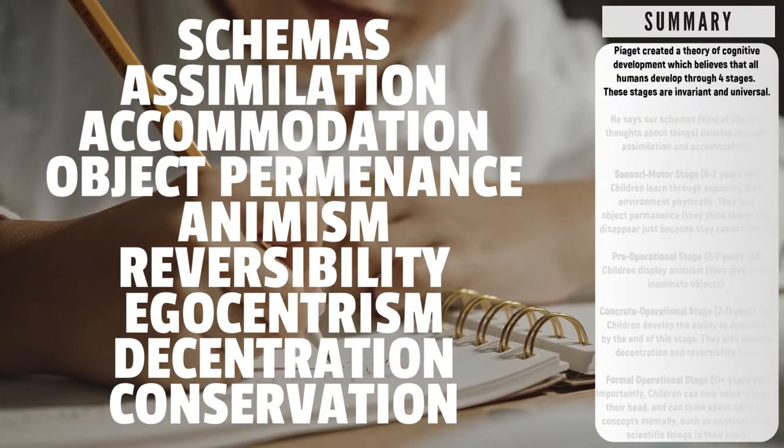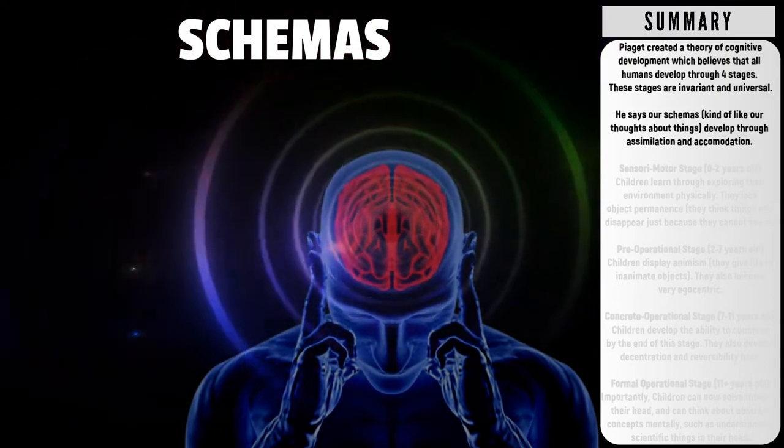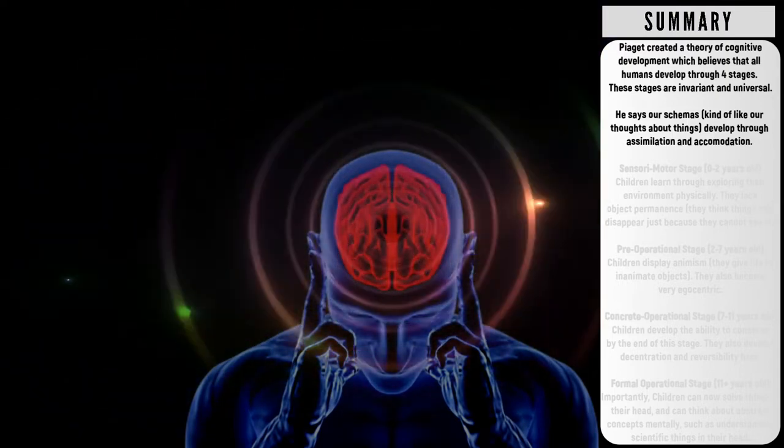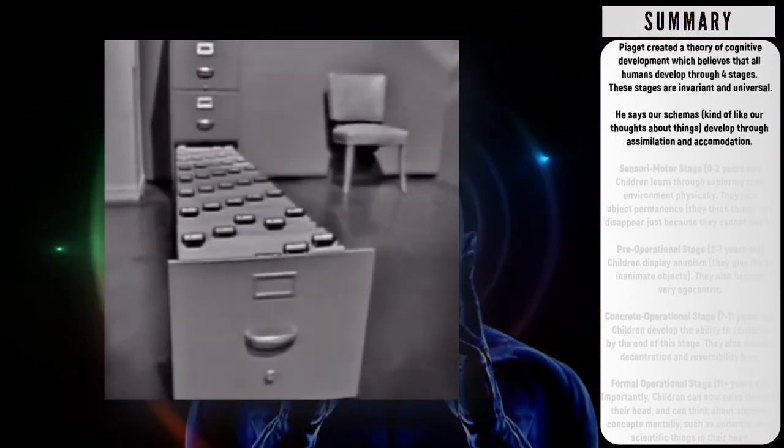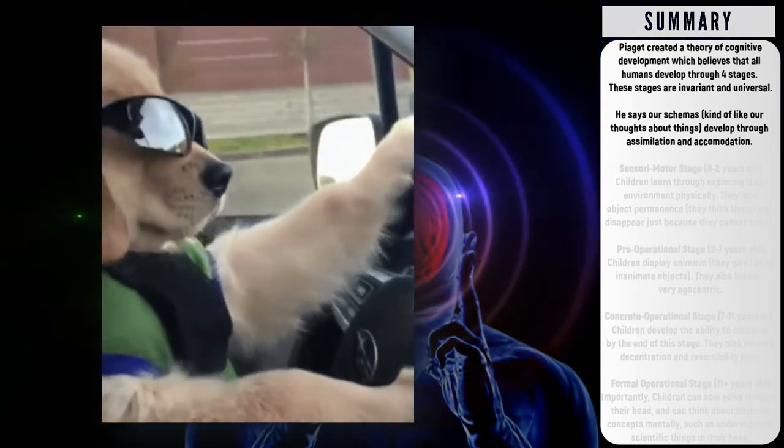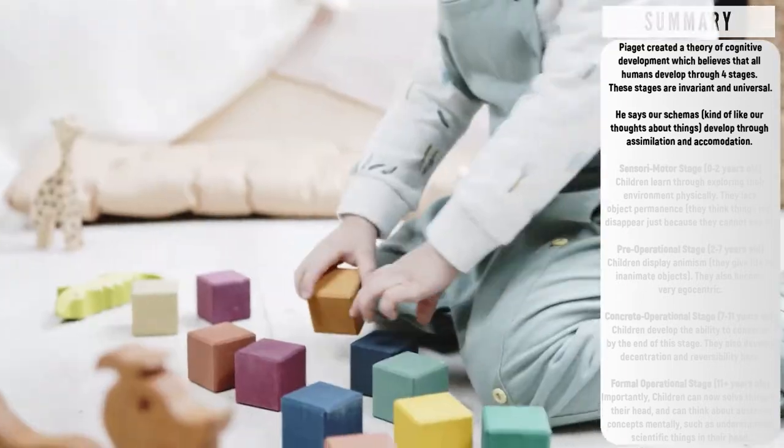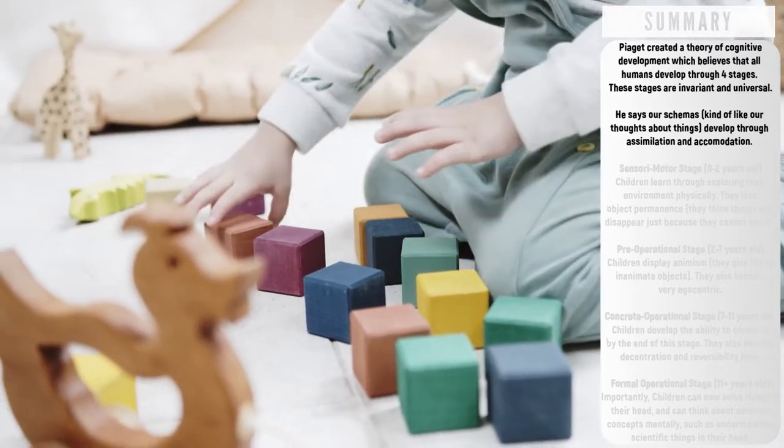We're going to start with schemas. Schemas are an important key term. Schemas are simply mental pockets of organized information - think of it as like a filing cabinet of all the information you have in your head. If I say the word dog, you may think small, furry, four legs. These are schemas of the word dog.